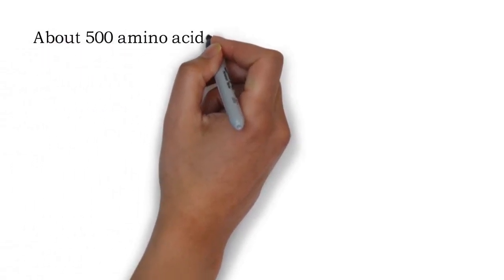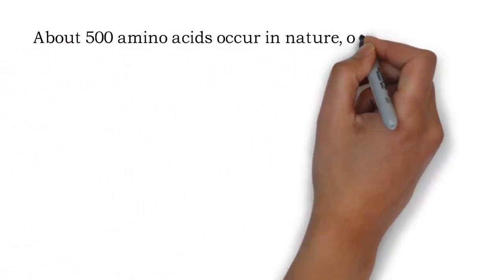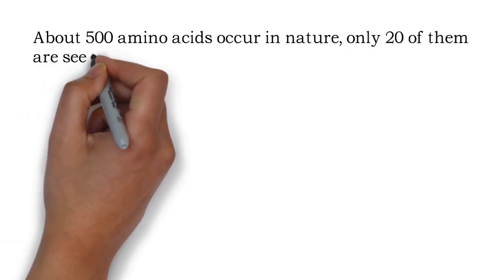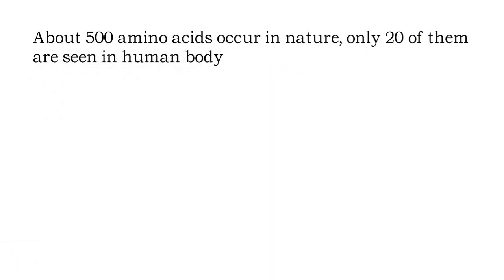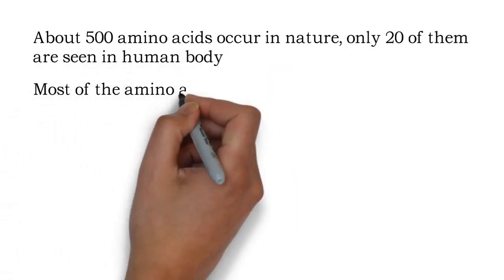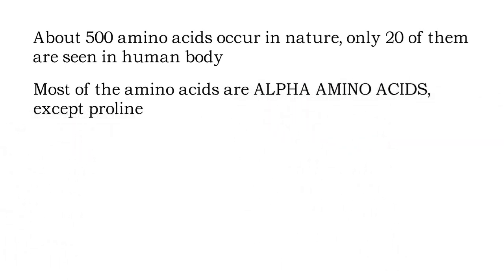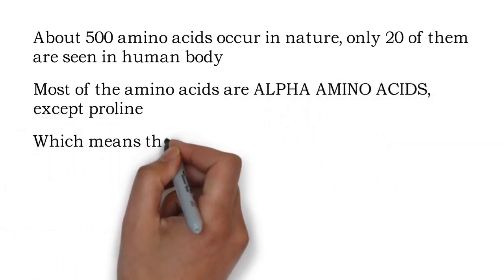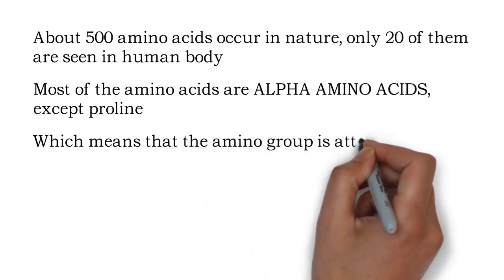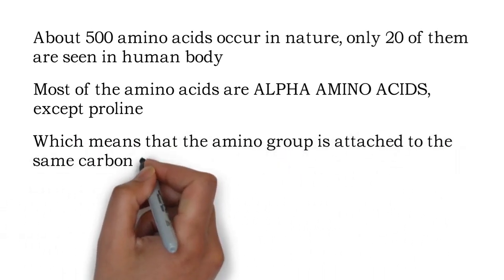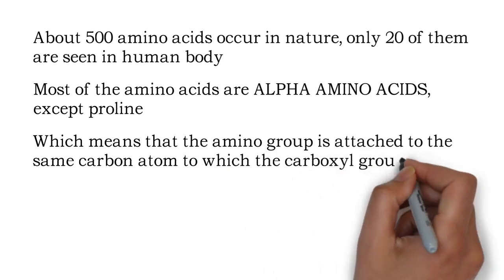There are 500 amino acids that occur in nature, but only 20 of them are seen in human body. Most of the amino acids are alpha amino acids except proline. Alpha amino acid means that the amino group is attached to the same carbon atom to which the carboxyl group is attached.